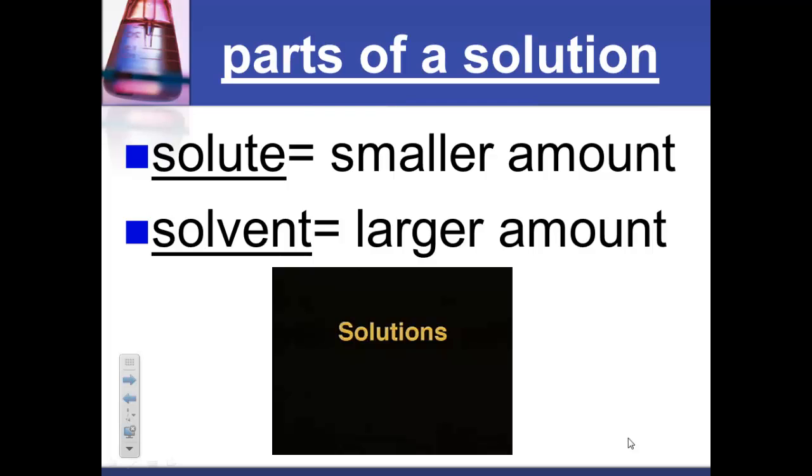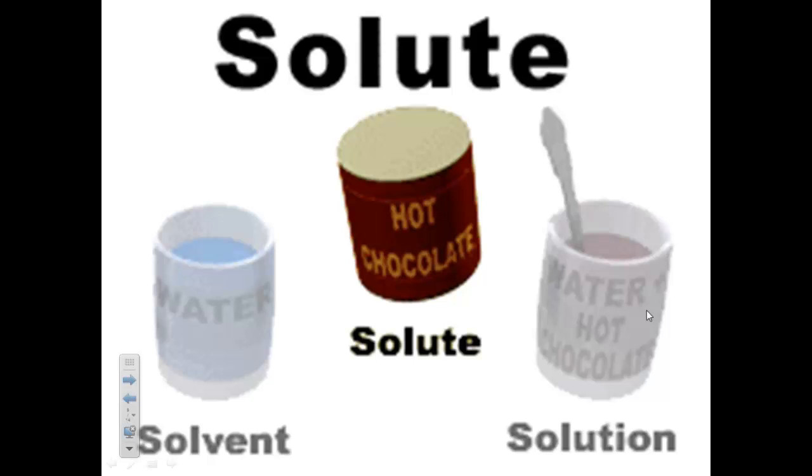Again, let's go over this because it's sort of confusing. The parts of the solution are a solute, which equals the smaller amount, and the solvent is the larger amount. When you're making hot chocolate, the solvent will be water. The solute is the hot chocolate mix because you put it into the water and it makes the solution of hot chocolate.